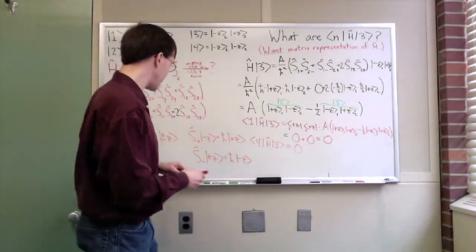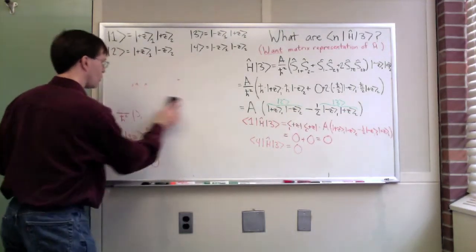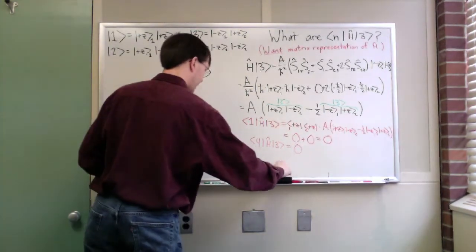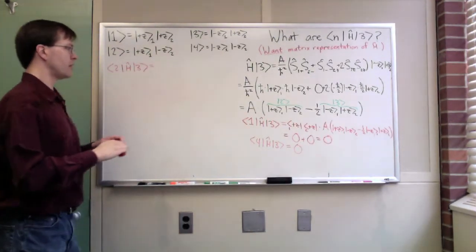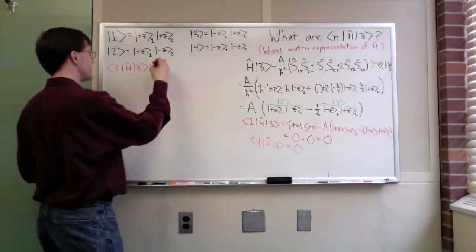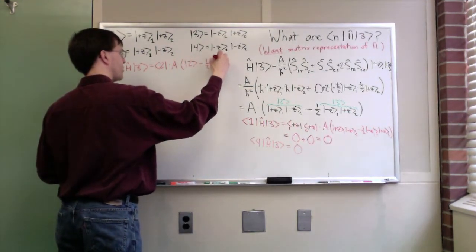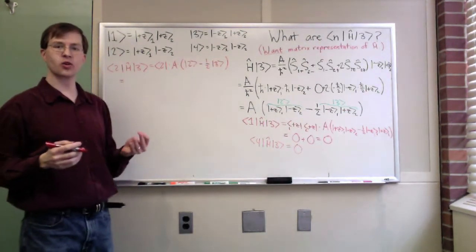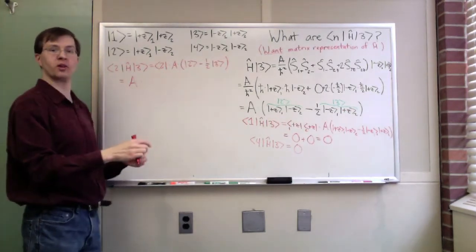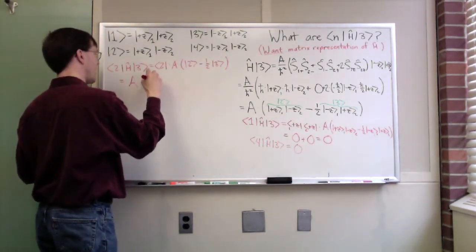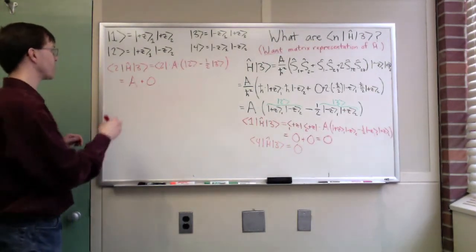For the others, states 2 and 3, we can work out exactly how those are going to work too. State 2 h hat 3, we can do this a quick and easy way. This is 2 bra times a times 2 ket minus 1/2 3 ket. As we saw in class, again, these are ortho-normal states. When the 2 and the 2 meet up, I get an a. I factor out the constant a and I just get 2 bra 2 ket, they're normalized. When the 2 and the 3 meet up, I get 0. So the 2 h hat 3 state comes out to be just a.